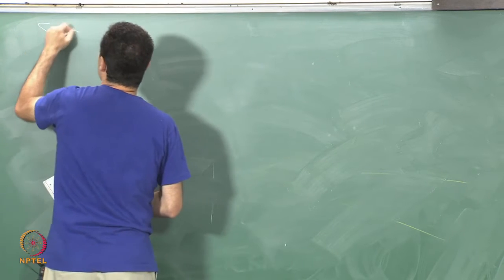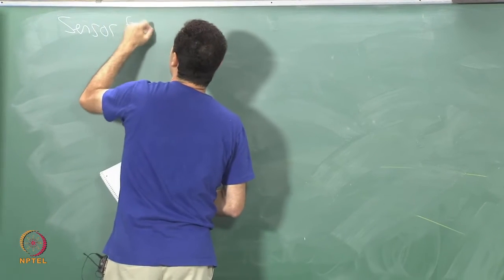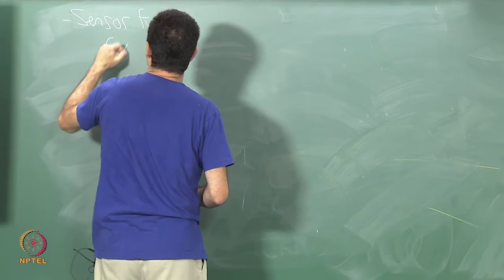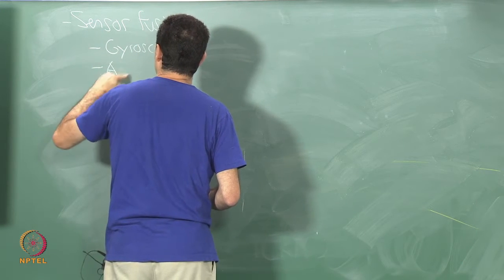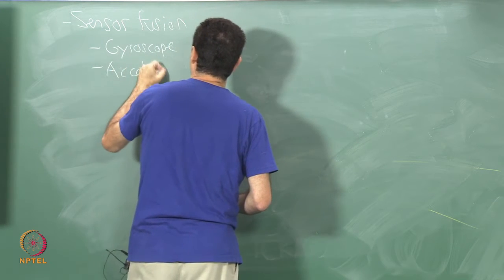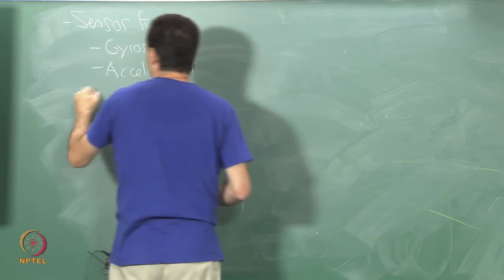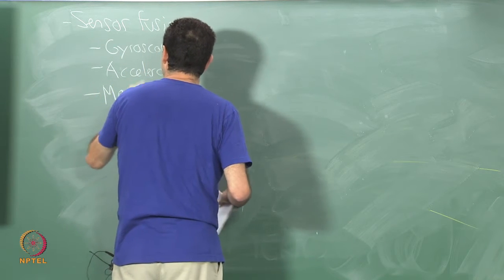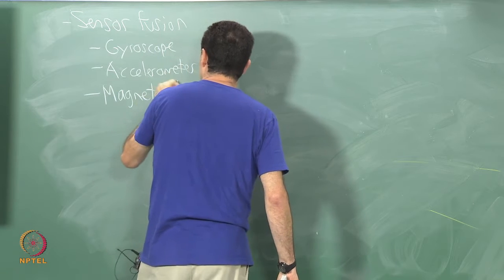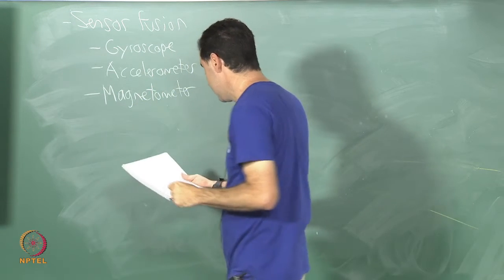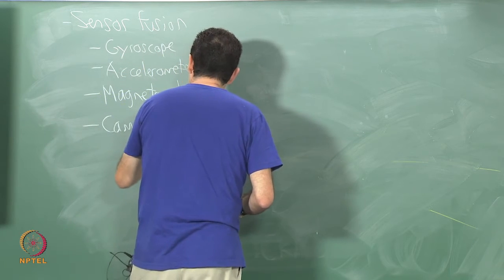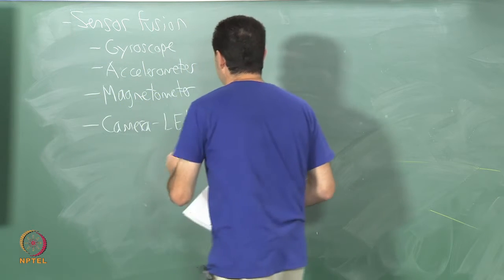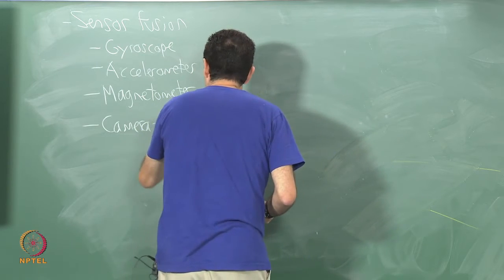When we put it all together we can imagine that we have a sensor fusion going on. How many different sensors do we have? Remember we have the gyro, we have the accelerometer, we have the sometimes flaky magnetometer, and now we have a camera LEDs paired together.